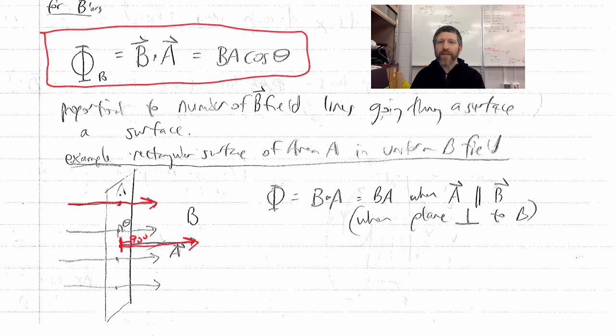So make sure that you understand that the dot product is between the B vector and the A vector, which is perpendicular to the surface itself.